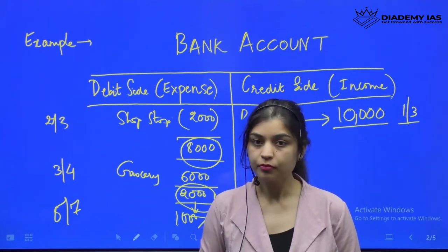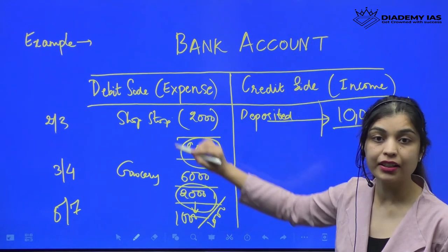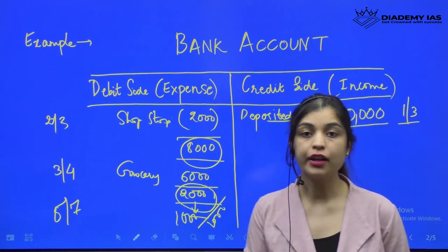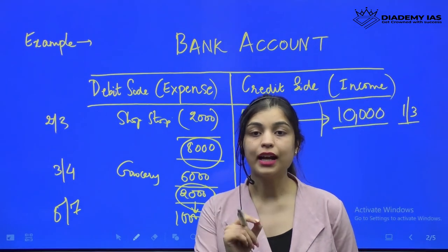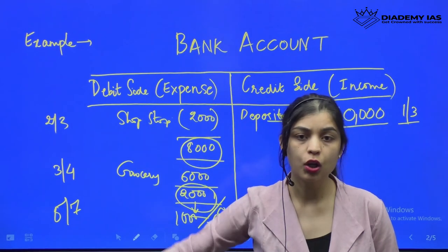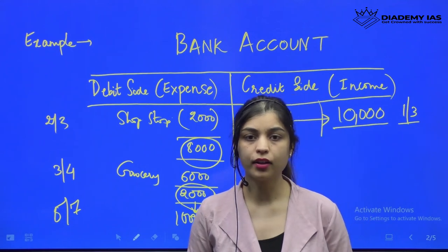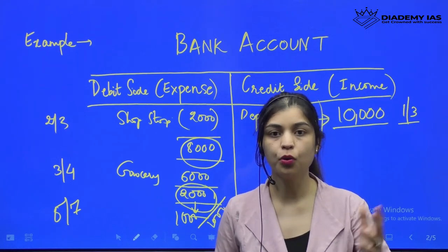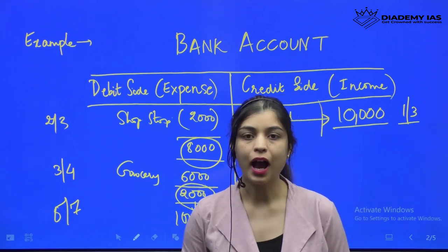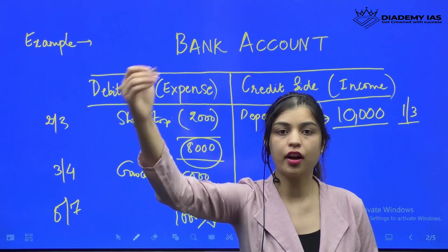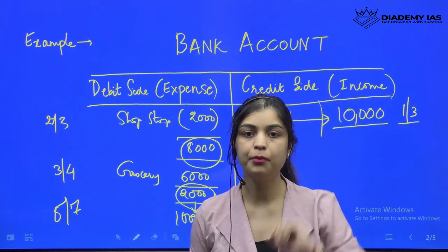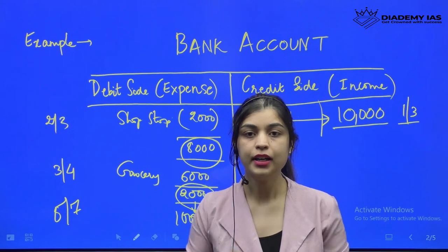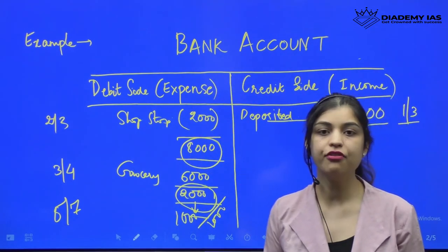What is the bank trying to do for you? It is trying to record the transaction — so that at any given point of time, even at midnight, if you want to know your bank balance, you log in to your internet banking portal, put in your login ID and password, and there you have your record: this is the amount you deposited, these were the expenditures you made, and this is the final balance. You don't need to memorize it — the bank is doing it for you, in the form of a bank account.